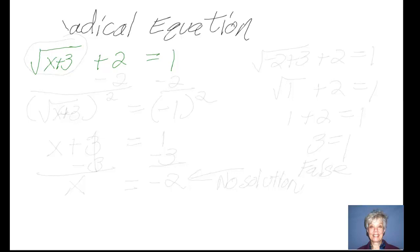Well, let's try this. Step 1 says we have to isolate the radical. Well, here it is. But I have a plus 2 here, so I'm going to move the 2 over by subtracting it from both sides.